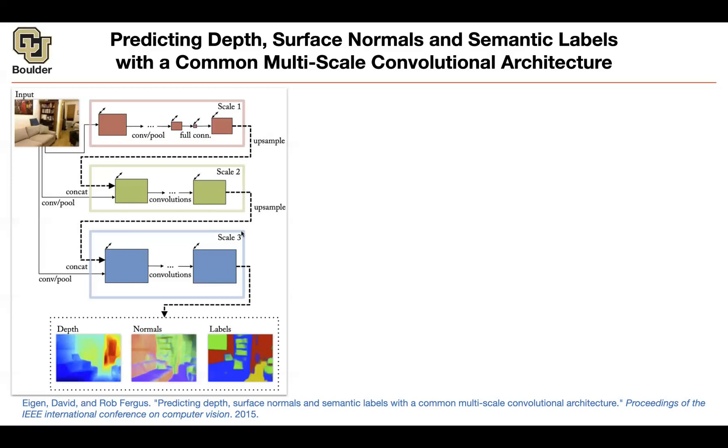The first global one is not outputting any depth, normals, or labels. These two are the scale one and scale two networks. You're going to train together, and then you're going to train scale three.